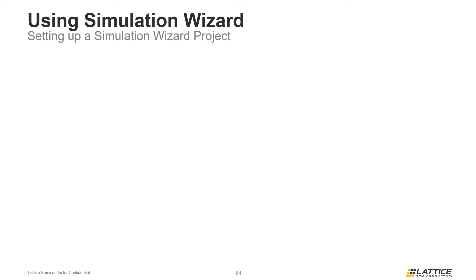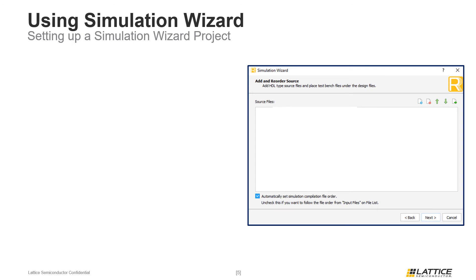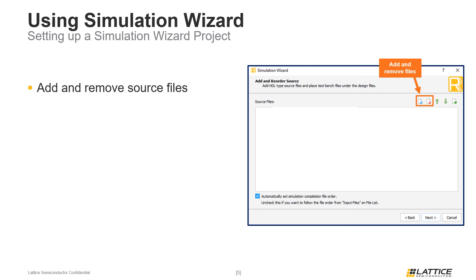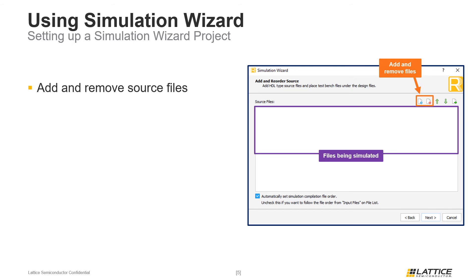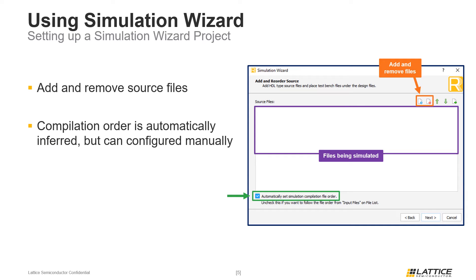The next page in the Simulation Wizard window is used to set up files for simulation. In this page, users can add and remove files included for project simulation using the page icons at the top of the window. By default, all files in an implementation that are included for simulation, or synthesis and simulation, will appear here. The order files appear is the order they will be compiled in, with the top file compiled first. At the bottom of the window is the Automatically Set Simulation Compilation File Order option checkbox. If enabled, the order of simulation files will automatically be inferred by Radiant.